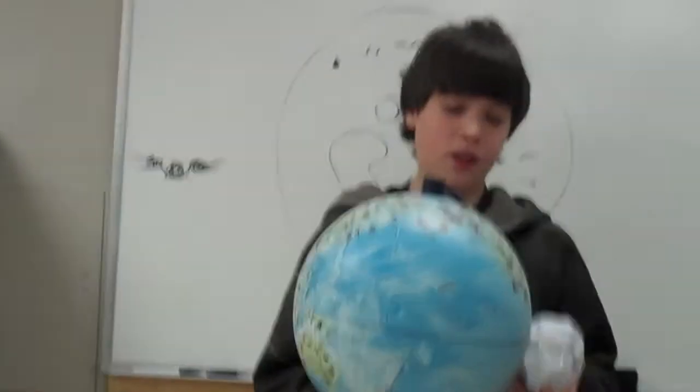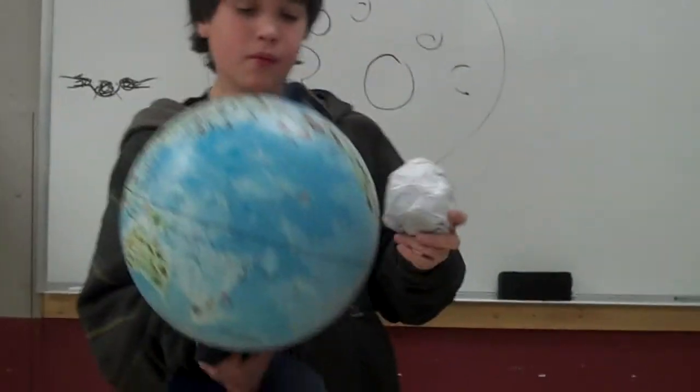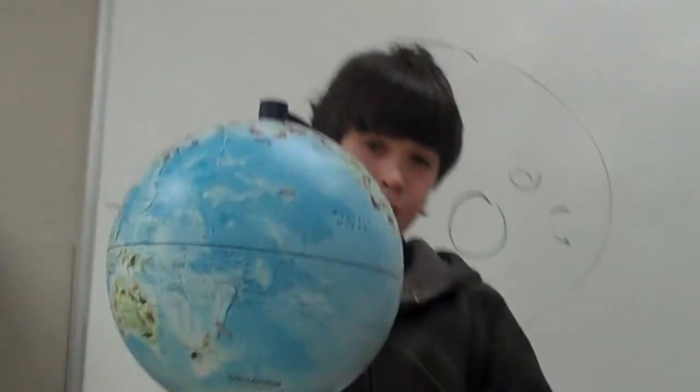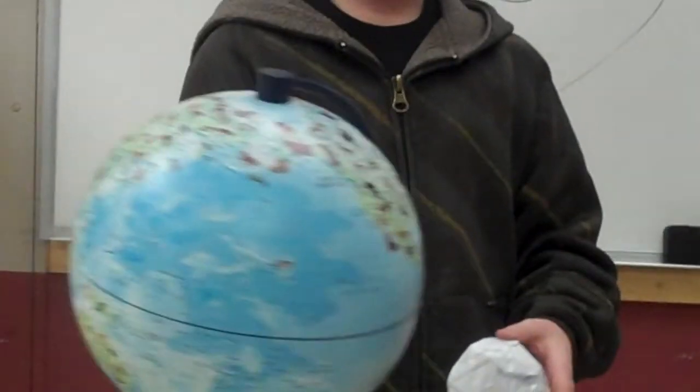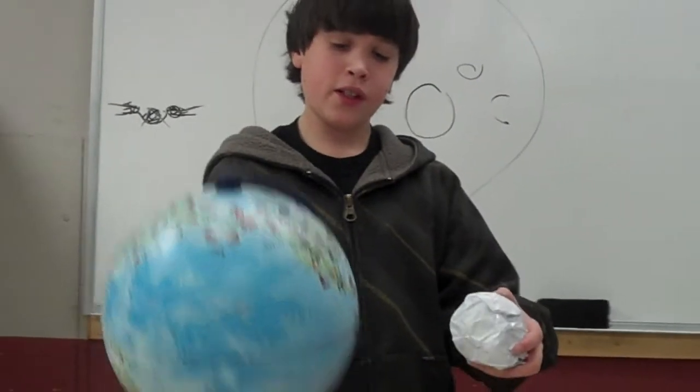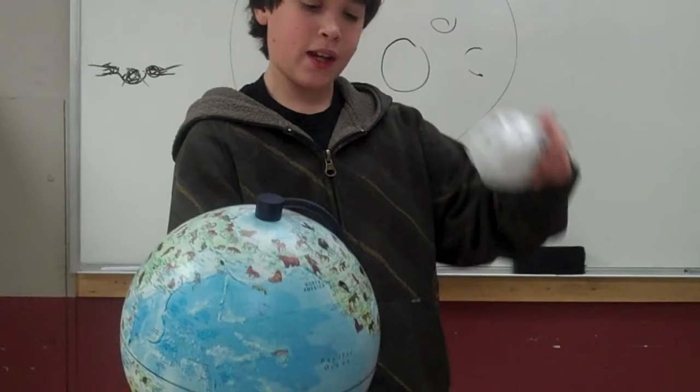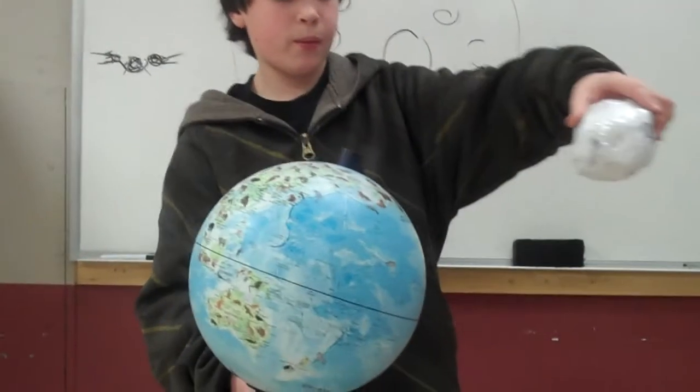It's like the cloth of the universe. So the heavier thing, like if this was the sun, the heavier thing would go down, which has the most gravity. So it's heavier and it will sink down, and then the planets would orbit it.